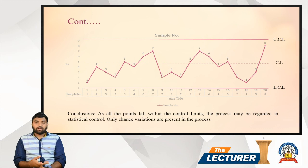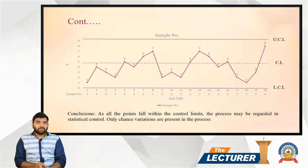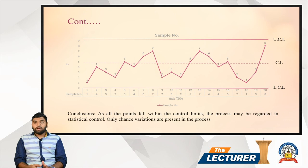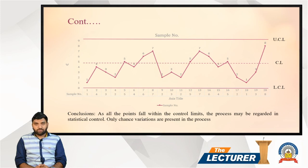So now, with these three lectures, the P chart, NP chart, and C chart are complete. The attribute control charts and practical questions have been covered. I will see you in the next lecture. Thank you very much.